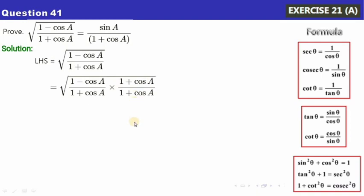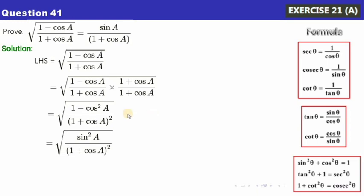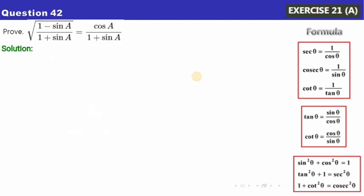Now, 1 minus cos²A equals sin²A by the Pythagorean identity. So inside the square root we have sin²A over (1 plus cosA)². Taking the square root: √(sin²A) is sinA and √((1 plus cosA)²) is 1 plus cosA, giving sinA/(1 plus cosA), which is exactly what we wanted to show. You may pause and note the solution.